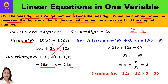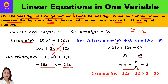The original number is 12x and the interchange number is 21x. When the number formed by reversing the digits is added to the original number, the sum is 99. So 21x plus 12x equals 99, which gives 33x equals 99. Therefore x equals 99 divided by 33, which equals 3. The original number is 12x, so 12 into 3 equals 36. If they ask for the interchange number, it is 21 into 3, which is 63.